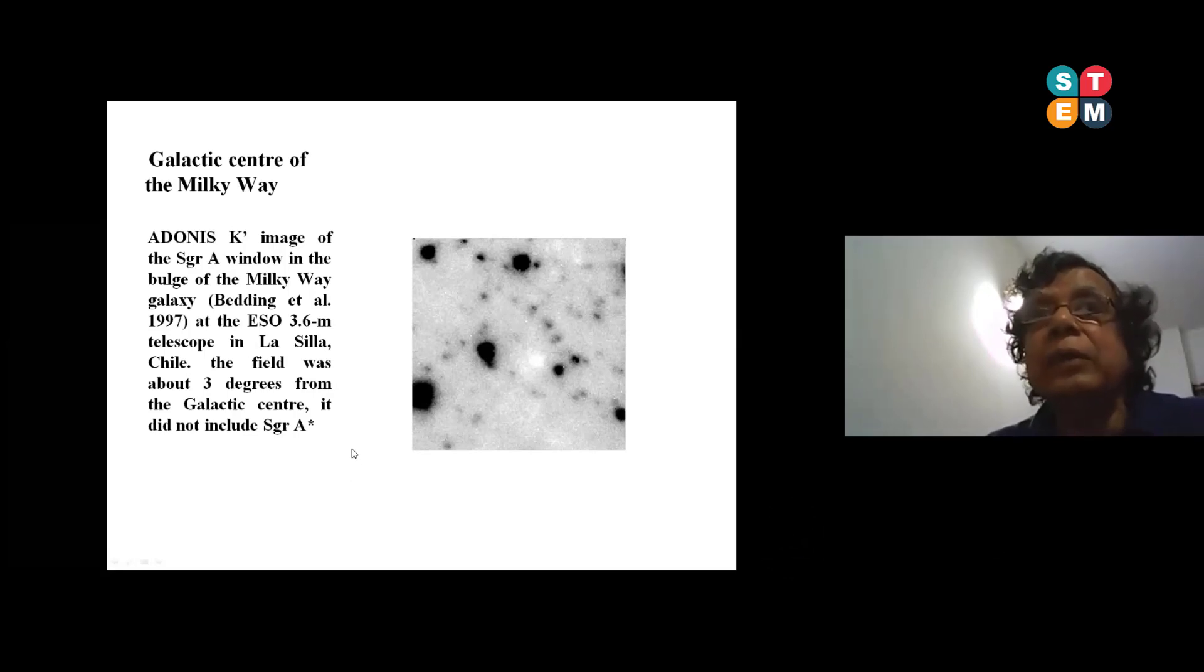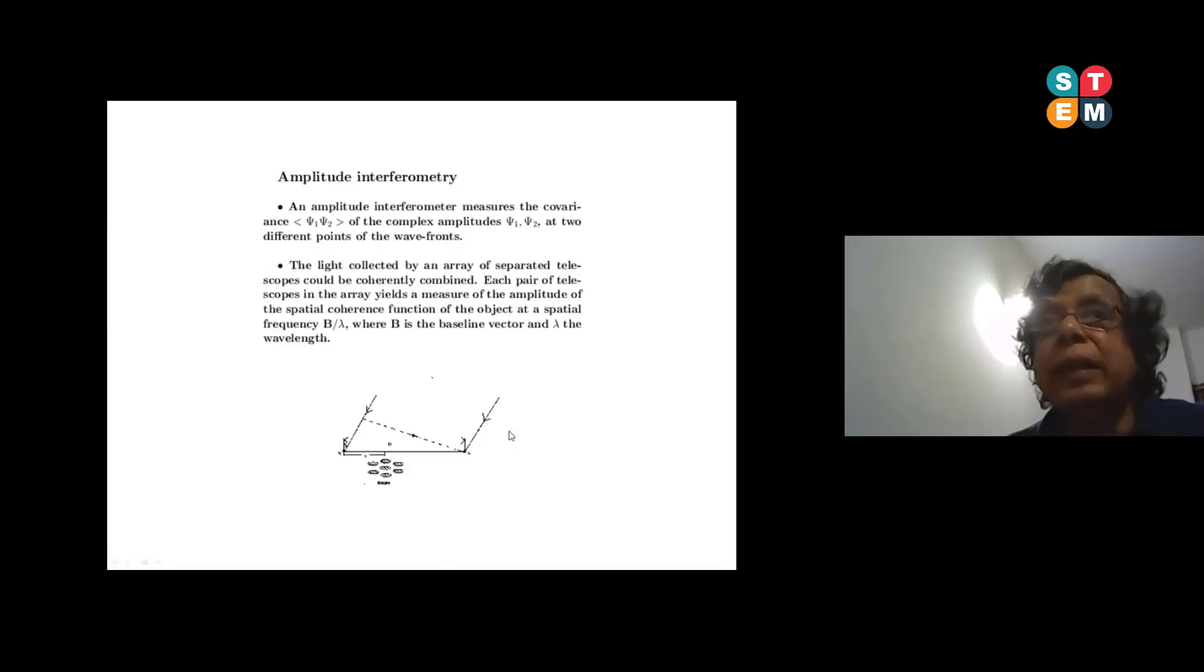This galactic center of the Milky Way galaxy - you know that recently two persons were given Nobel Prize because they identified the supermassive black hole. But at the time, one of my friends, Bedinelli, used ESO 3.6 meter telescope at La Silla, at the galactic bulge, not the Sagittarius A* but the bulge. He used to have adaptive optic system. In 1997 he got this sharp image.